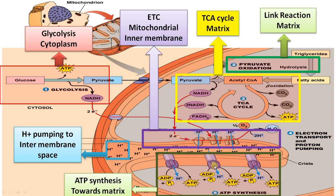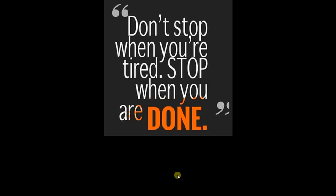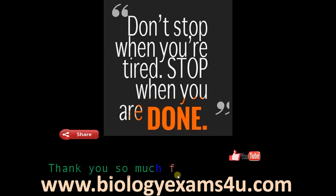The ATP synthase enzyme has an active site on the matrix side. As protons move through it, ADP and Pi combine by the force of this proton movement, finally forming ATP. So ATP is synthesized in the matrix region. Hope you are clear with all these events — thank you so much for your support.